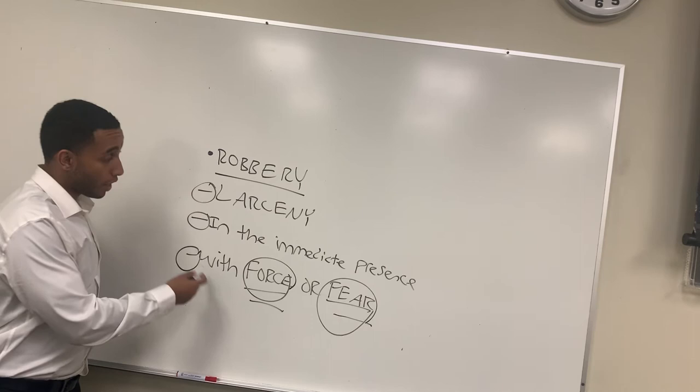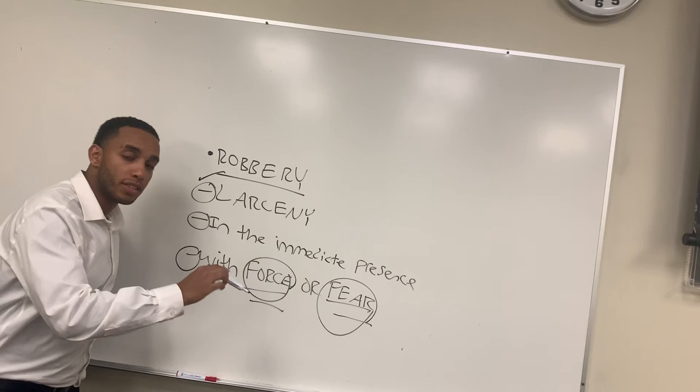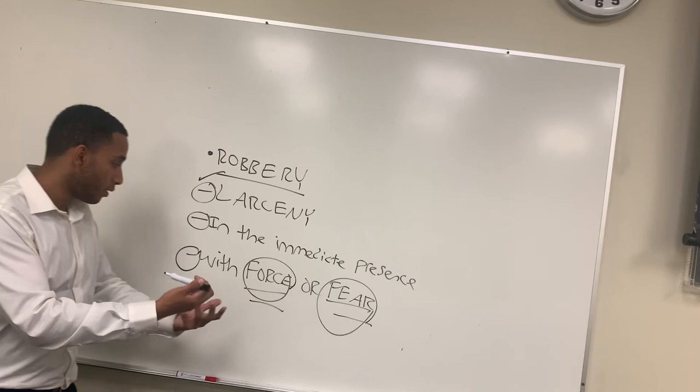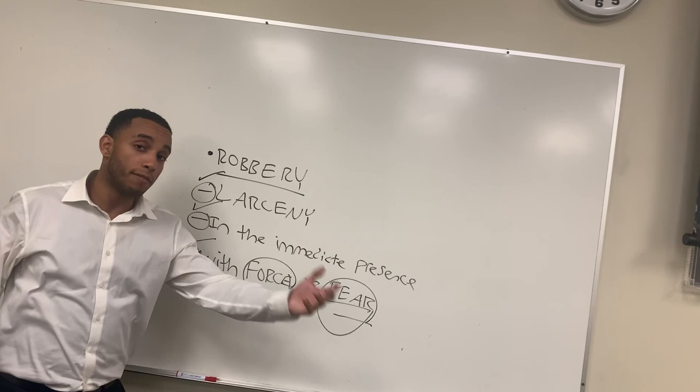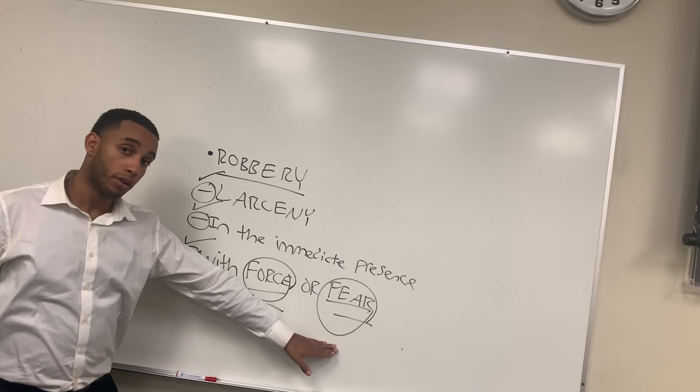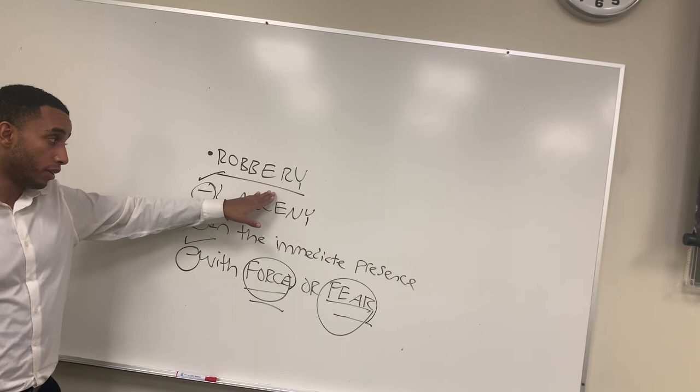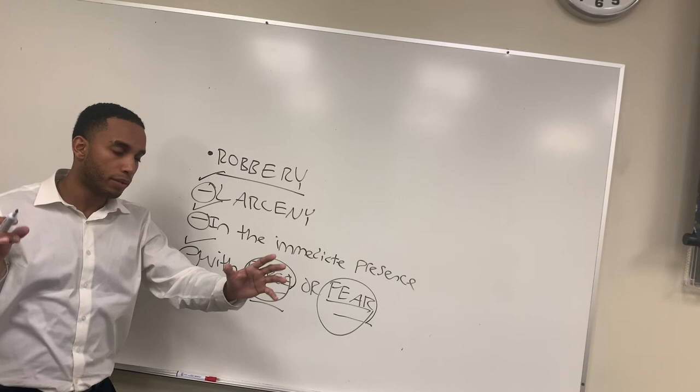So, robbery requires a larceny — check. It needs to be in the immediate presence of the victim, meaning their actual physical presence. And lastly, there needs to be force or fear — either a violent act toward the victim or using a knife or a gun to use force or fear to successfully commit the larceny. If you don't succeed in committing this, it can be attempted robbery. In law, everything is very gray on what will happen.